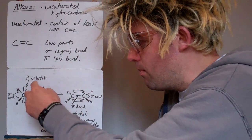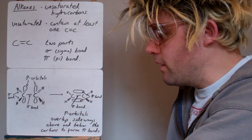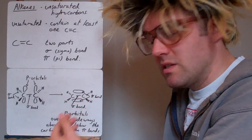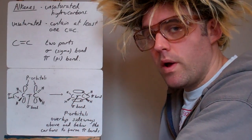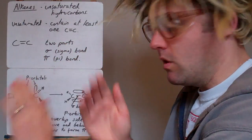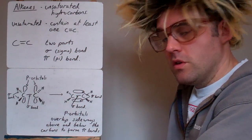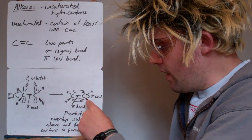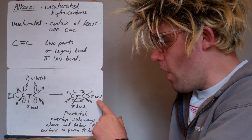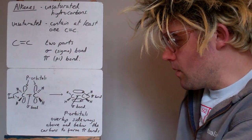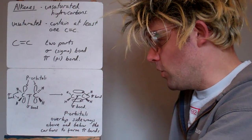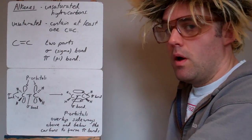Now p orbitals, remember like the figure of eight, they're above and below the plane of the carbons, above and below the carbons. And they can overlap sideways. They're not directly overlapping, so that's why a pi bond is not as strong. It's a sort of sideways overlap. But it's on top of a sigma bond. So there's already a sigma bond there. And then we've got these p orbitals overlapping sideways. And when they overlap, it makes what we call a pi bond. So p orbitals overlap sideways above and below the carbons to form pi bond. So a double bond, remember, is a sigma and a pi bond.